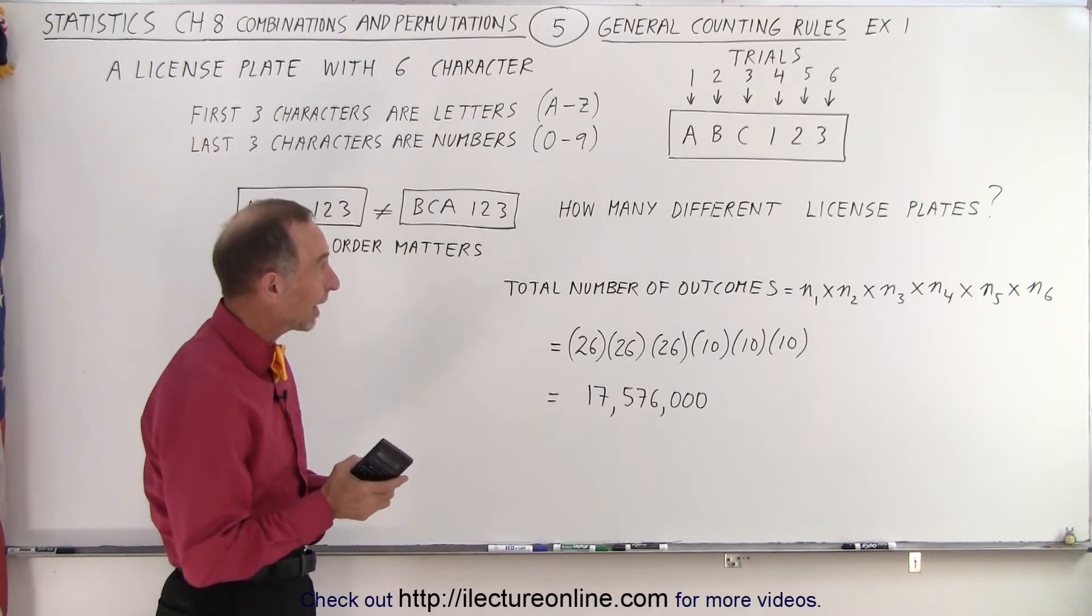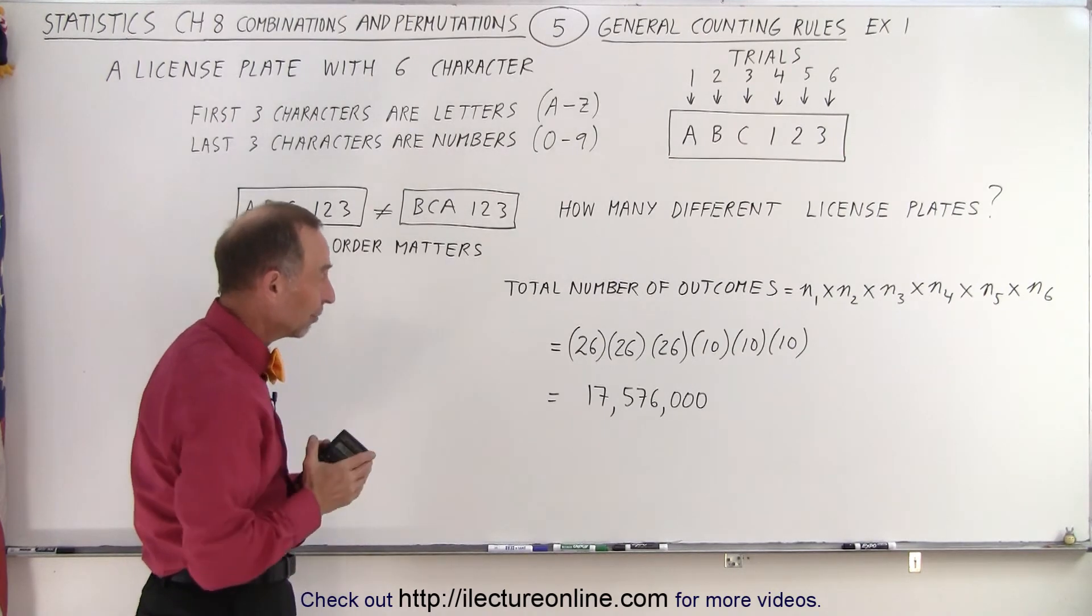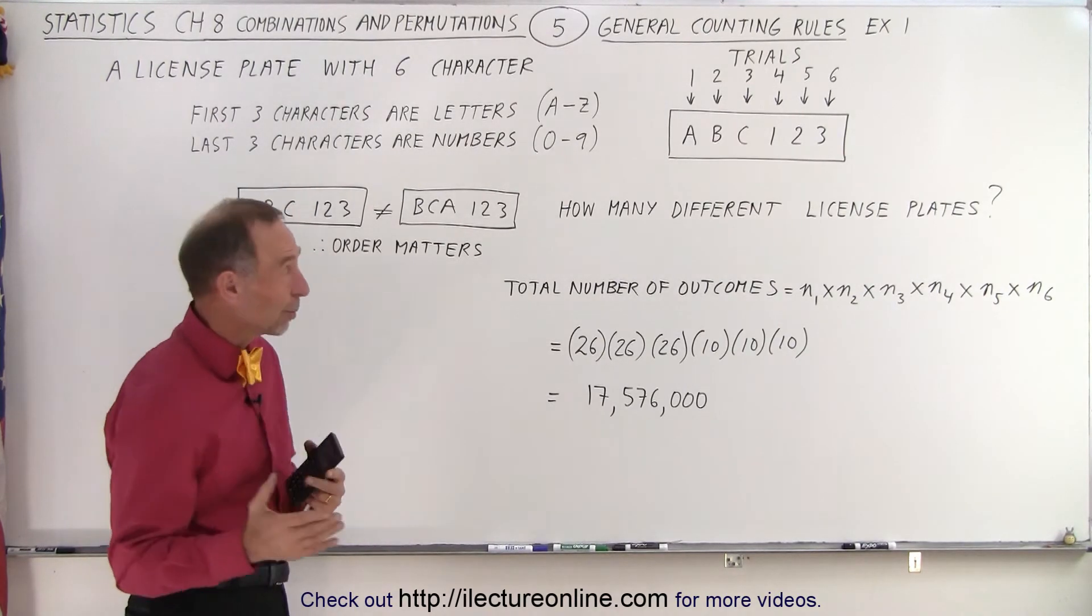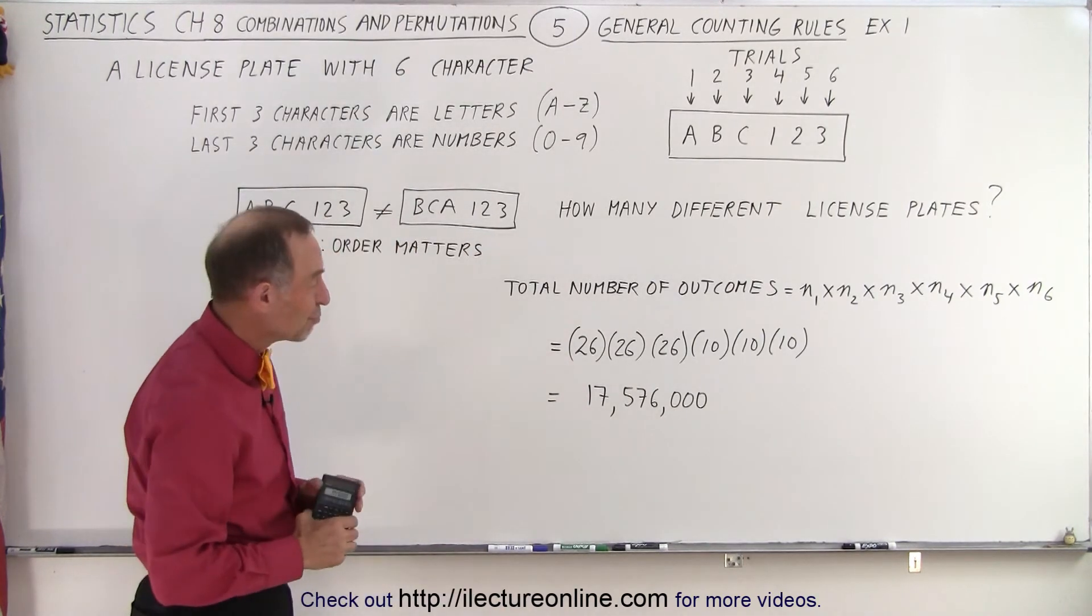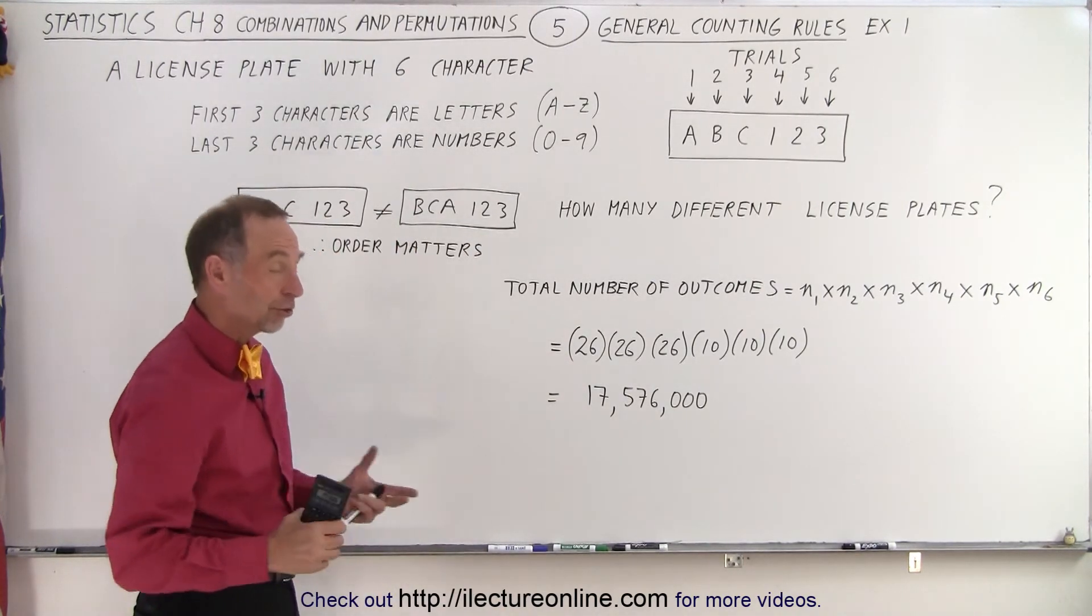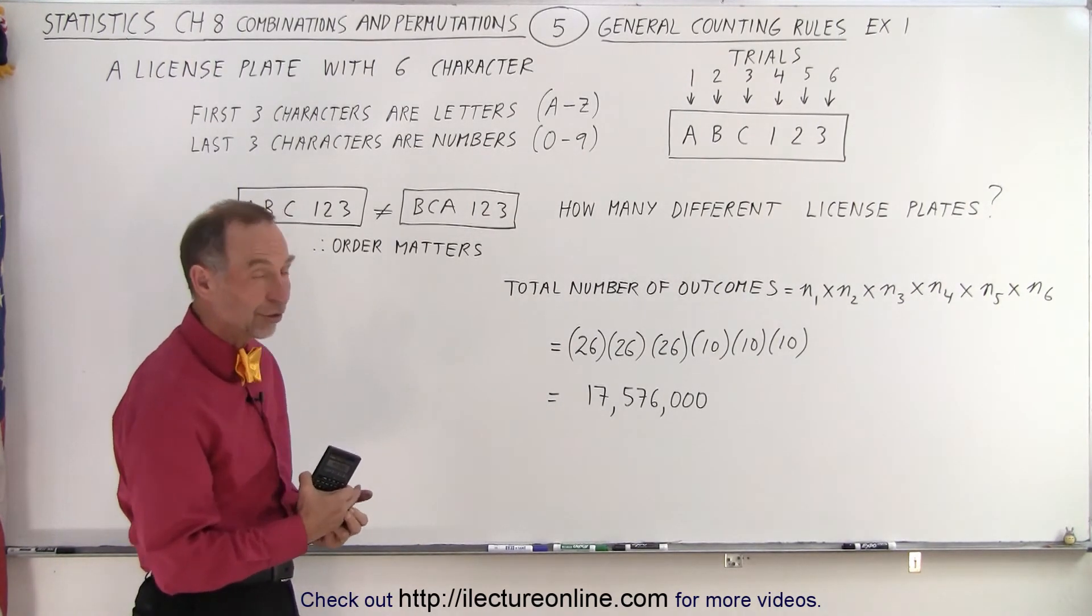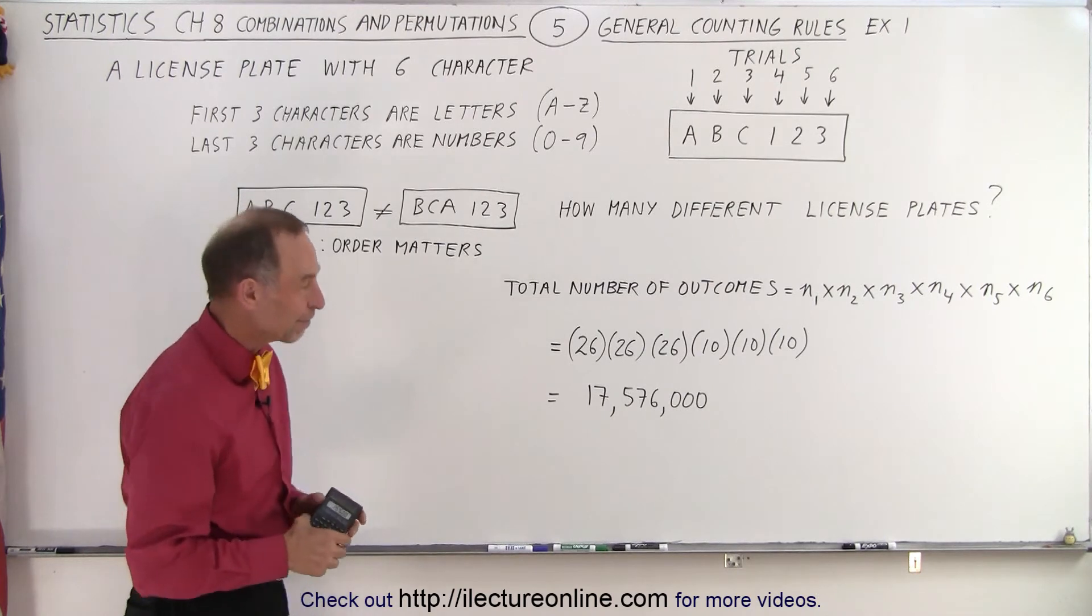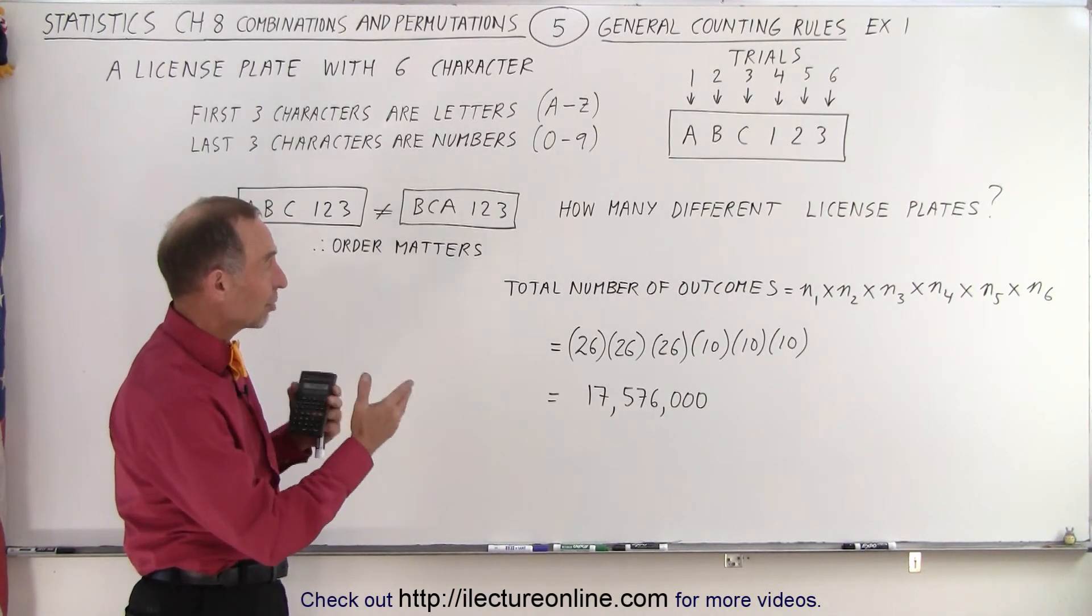So if any country or any state wants to use that mechanism for license plates then the maximum of license plates they can have is about 17 and a half million license plates. So for large countries or large states with lots of cars they would run out of numbers to use and they probably have to go to a different scheme. We'll look at some examples of different schemes later but at least here's a good example for the total number of outcomes.